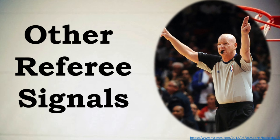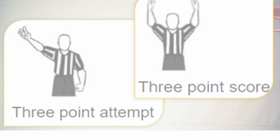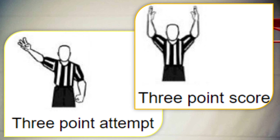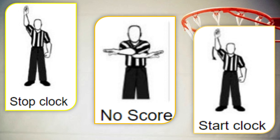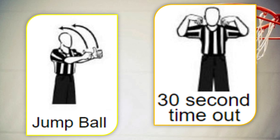Other referee signals: the first is a 3-point attempt. The next is a 3-point score. Next is stopwatch. Then no score. The next is start clock. Then jump ball. And the last is 30-second timeout.